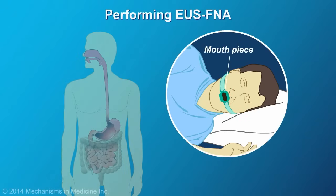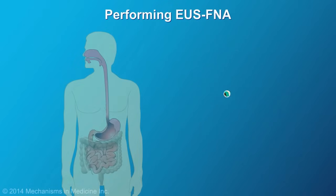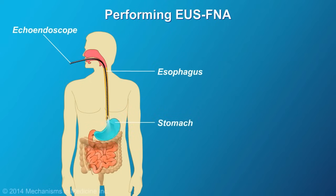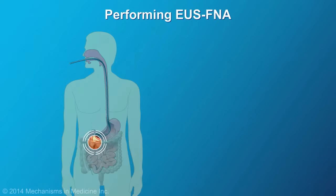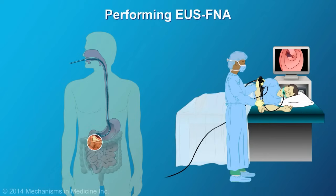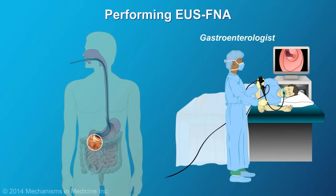A mouthpiece will be used to protect both your teeth and the echoendoscope. The echoendoscope is then inserted into the mouth, passed through the esophagus, the stomach, and into the duodenum. The area of interest is then carefully examined. When indicated, samples are obtained using FNA for further analysis.